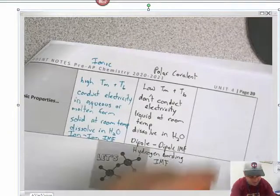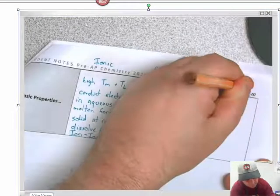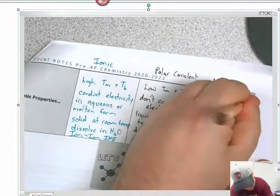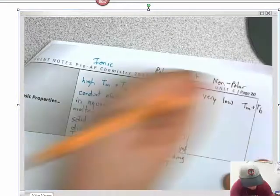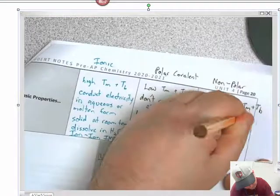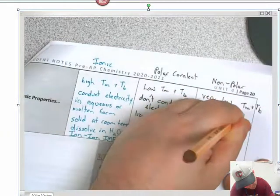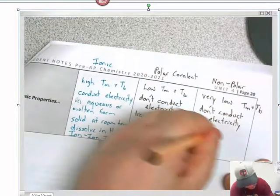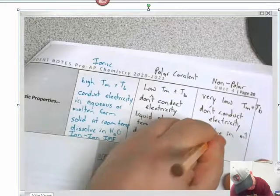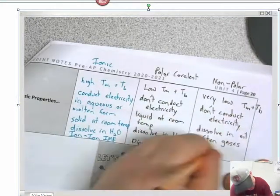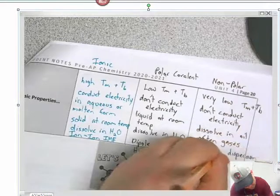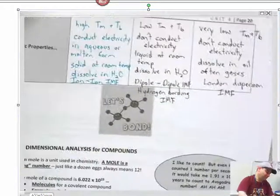Then we get to non-polar covalent. These have very low melting points and boiling points. Don't conduct electricity. They dissolve in oil because oil is non-polar. They're often gases. And they have the London dispersion intermolecular force.